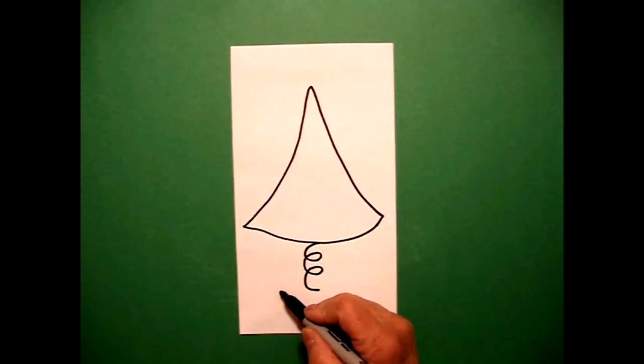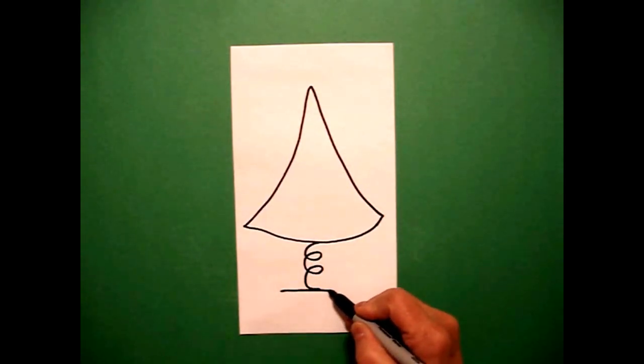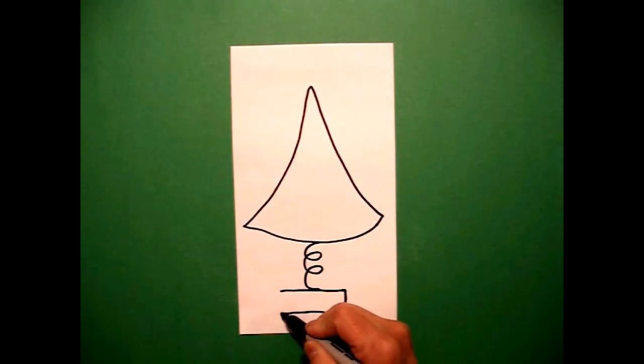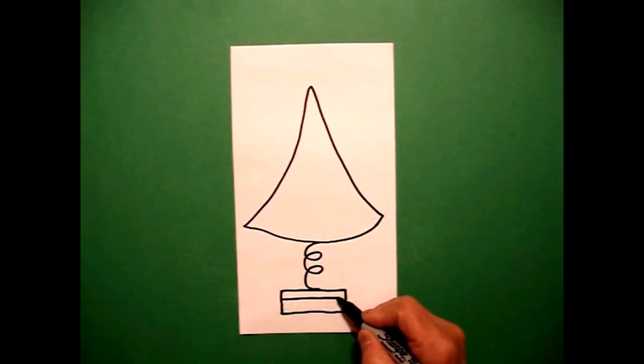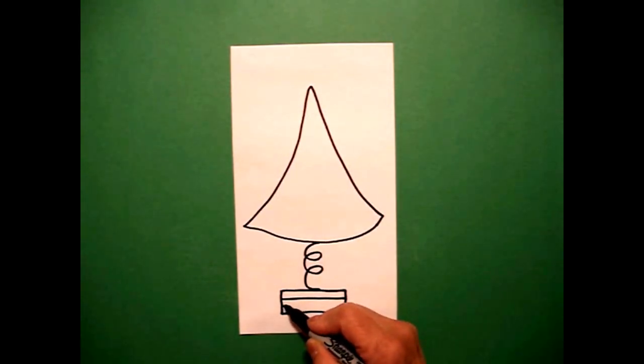And now I'm going to draw a rectangle. So I draw a straight line over, straight line down, straight line over, straight line up. In the middle, I'm going to draw a straight line across once, straight line across twice.